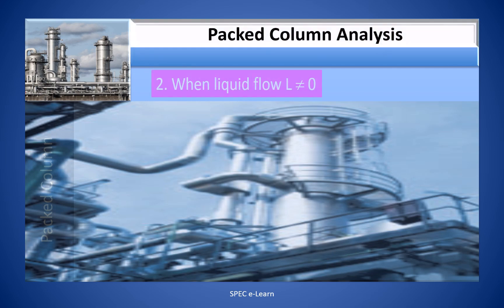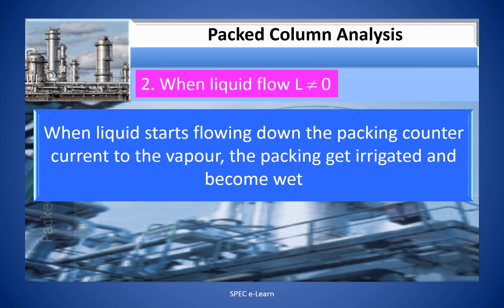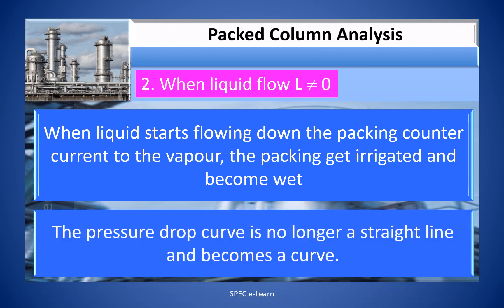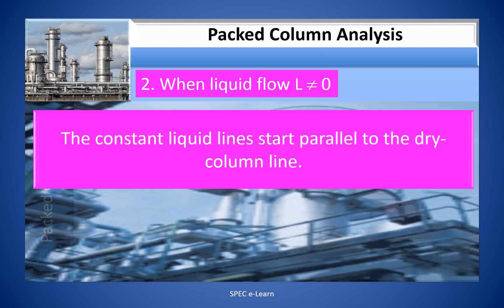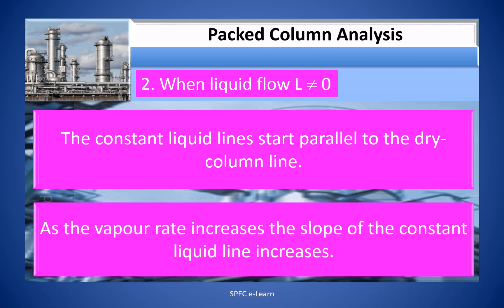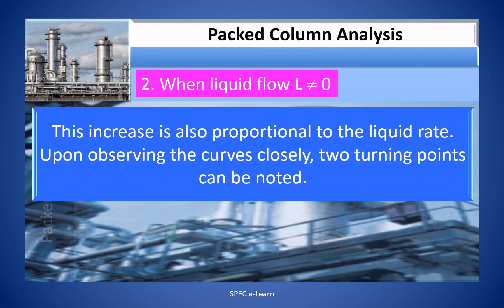A dry tower means only gas flows through the tower packing and there is no liquid flow. This is the condition that can be realized during column startup operation. The straight line represents the pressure drop line for dry packing (L = 0), and its relationship to mass velocity G is expressed by the equation: delta P divided by Z is proportional to G to the power 2. Condition 2 is when liquid flow L is not equal to 0. When the liquid starts flowing down the packing, counter-current to the vapor, the packing gets irrigated and becomes wet. The pressure drop curve is no longer a straight line but becomes a curve. The constant liquid lines start parallel to the dry column line, and as the rate increases, the slope of the constant liquid line increases, also proportional to the liquid rate.